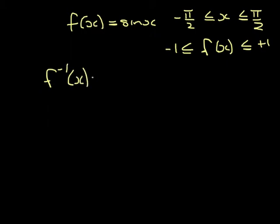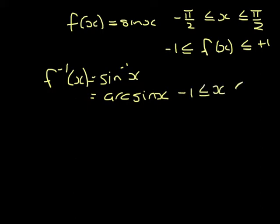And the inverse of sine is arcsine. The domain of that is the range of the inverse, so our domain will go from minus 1 to plus 1. And our range is the domain, so it will go from minus pi over 2 to plus pi over 2.